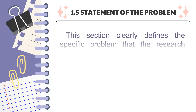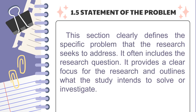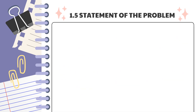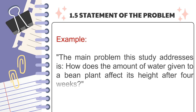Next is the statement of the problem. This section clearly defines the specific problem that the research seeks to address and often includes the research question, providing a clear focus for what the study intends to solve or investigate. Example: How does the amount of water given to a bean plant affect its height after four weeks? This statement specifies the independent variable — the amount of water — and the dependent variable — the height of the bean plants — and includes a specific timeframe of four weeks. A well-defined statement of the problem is the foundation of any successful research project.